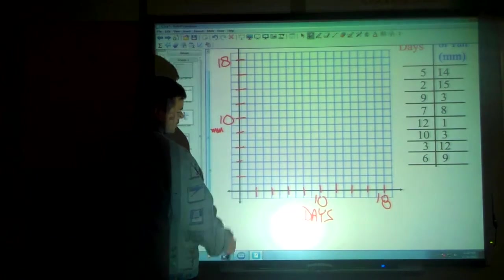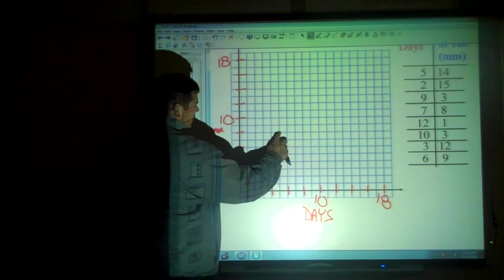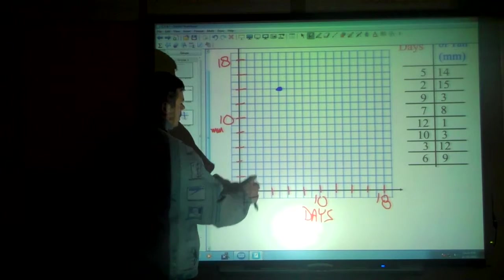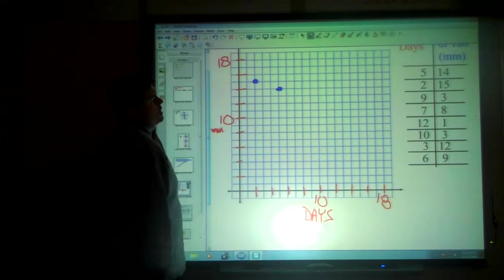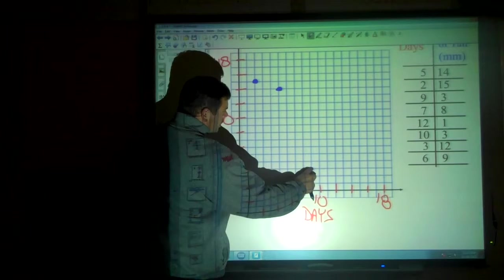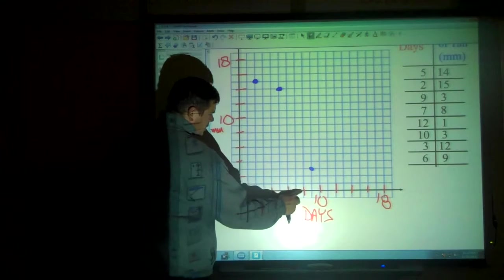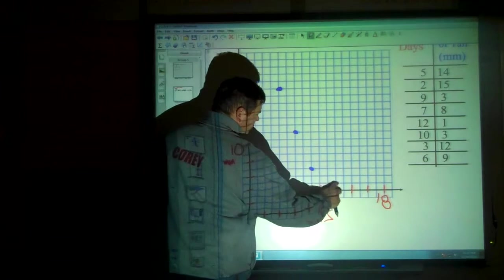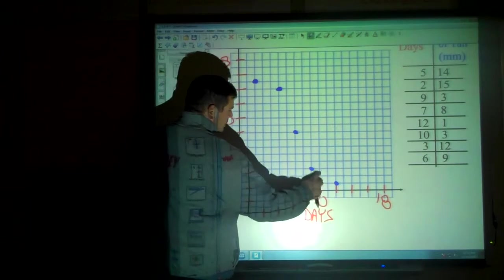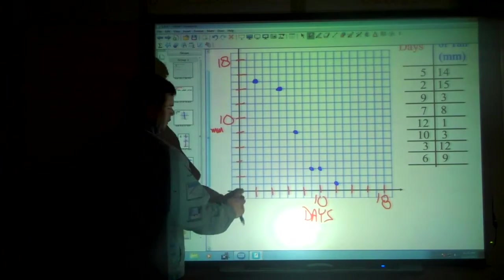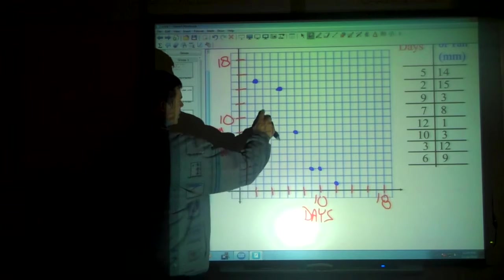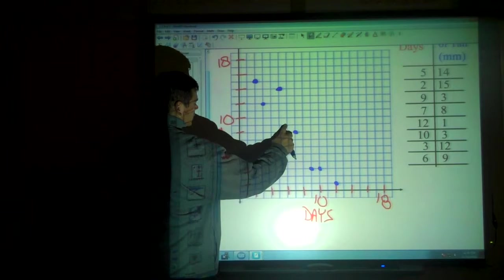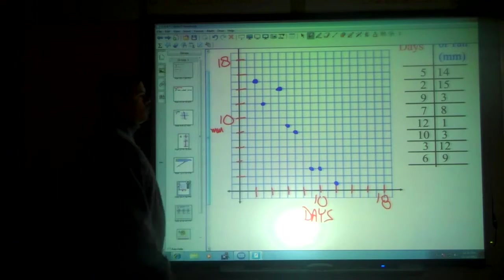These are all coordinates. So plotting the points: 5, 14. Then 2, 15. Then 9, 3. Then 7, 8. Then 12, 1. Then 10, 3. Then 3, 12. And 6, 9. So those are all the coordinates.